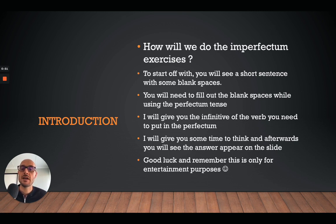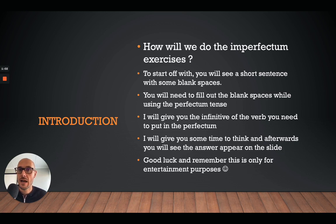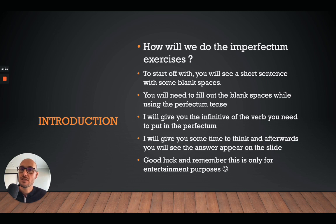How will we do the imperfectum exercise? First of all, if you don't remember what the imperfectum is or how we form it in Dutch, not a problem — click on the link you'll see right now. That video covers how we form the imperfectum in Dutch. As a quick reminder, the simple past is the equivalent of 'I walked,' 'I saw,' 'I went' — so it's ik wandelde, ik zag, ik ging.